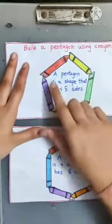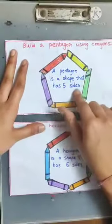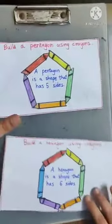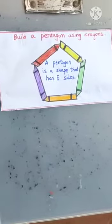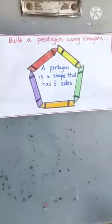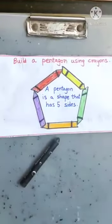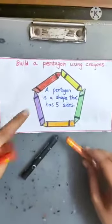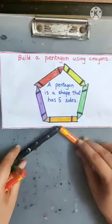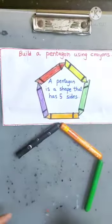What is a pentagon? A pentagon is a shape that has five sides. Let me show you how to make a pentagon using crayons. I will put one crayon like this, just as shown in the flash card, and then a second like this, third one like this, fourth one like this...